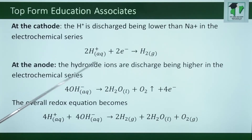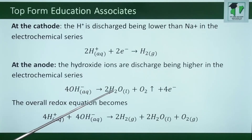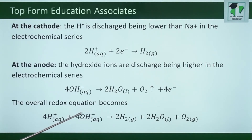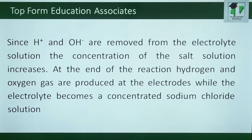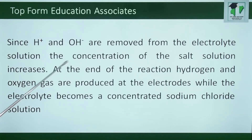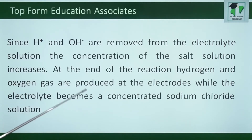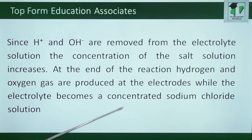While at the anode, the hydroxide ions are discharged, being higher in the electrochemical series, to give water and oxygen gas. The overall reduced equation becomes hydrogen ion liberating hydrogen gas, while hydroxyl ion liberates water and oxygen gas. Since hydrogen and hydroxide ions are removed from the electrolyte solution, the concentration of the salt solution increases. At the end of the reaction, hydrogen and oxygen gas are produced at the electrodes, while the electrolyte becomes a concentrated sodium chloride solution.